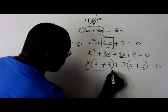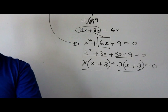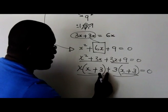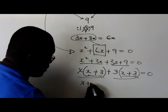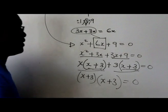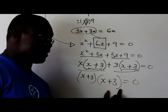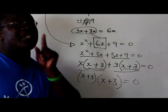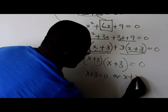Now I have two terms. Looking at them, there is a common factor: x plus 3, because these two terms are separated by a plus. So I'm going to factor out the x plus 3. What is left gives us x plus 3, equal to 0. So I have factorized the left-hand side: x plus 3 times x plus 3 equals 0. When two things multiply and the product is 0, one of them must be 0. So x plus 3 equals 0 or x plus 3 equals 0.